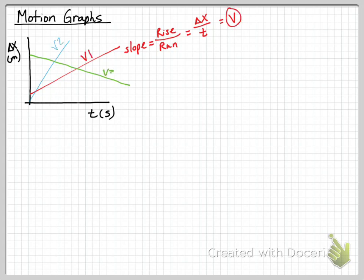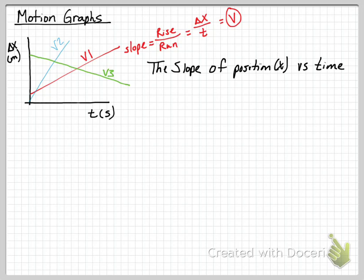So velocity is the slope of each line, and I've labeled each one as velocity 1, velocity 2, and velocity 3. Velocity 3 happens to have a negative velocity, and as we talked about, a vector quantity can be negative or positive. By definition: the slope of a position versus time graph is velocity — every time, especially when it's a line graph. We have two positive velocities and one negative velocity based on the slopes of those lines.